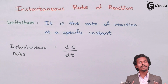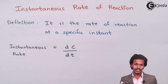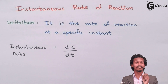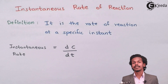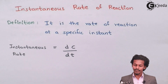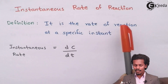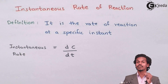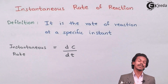Now talking about the next type: instantaneous rate of reaction. Instantaneous means at a particular time or at a particular moment. We determine the concentration of a reactant at a specific moment, and that process is known as the instantaneous rate of reaction. Its definition: it is the rate of reaction at a specific instant of time.